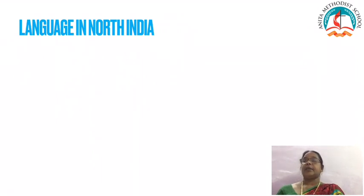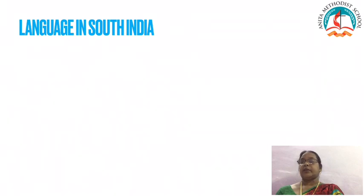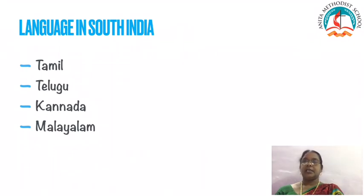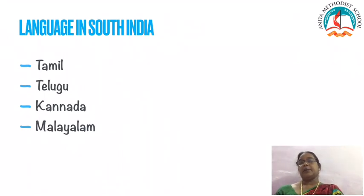In North India, the languages spoken include Kashmiri, Urdu, Punjabi, Hindi, Rajasthani, Gujarati, Bengali, and Assamese. In South India, the main languages of the Dravidian family — Tamil, Telugu, Kannada, and Malayalam — are spoken. But today, the usage of language has changed and it is often used as a communication skill, which is why we encourage you to speak in English at school.